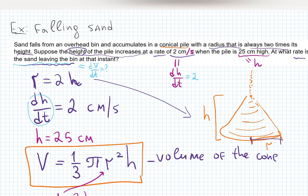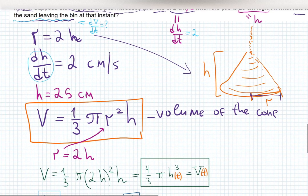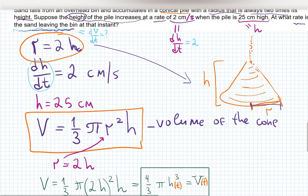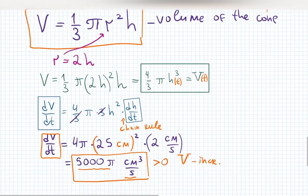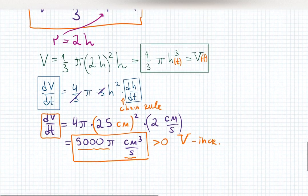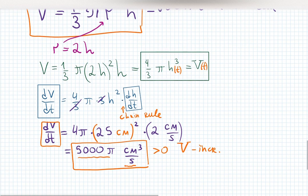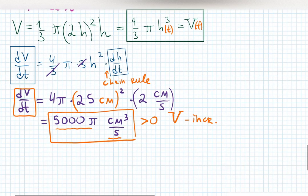Write down the formula, plug in the relationship between variables first — but do not plug in numbers too early. If you plug in numbers before differentiating, you'll get zero since constants differentiate to zero. First differentiate to get dV, then plug in the specific values. There are 11 related rates problems in the homework.